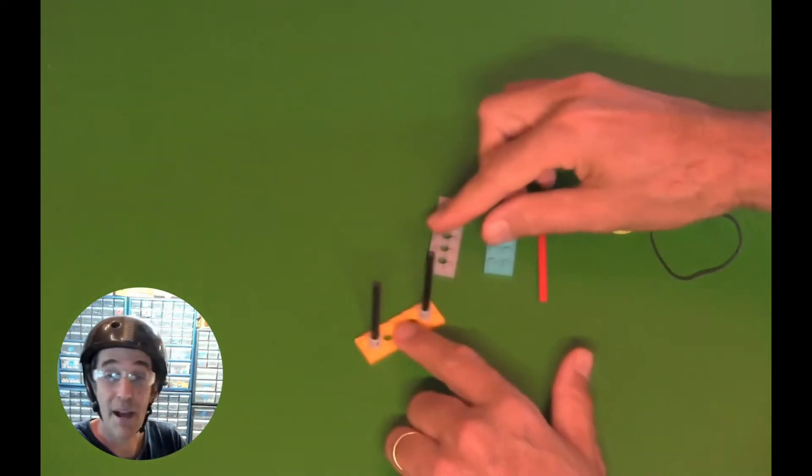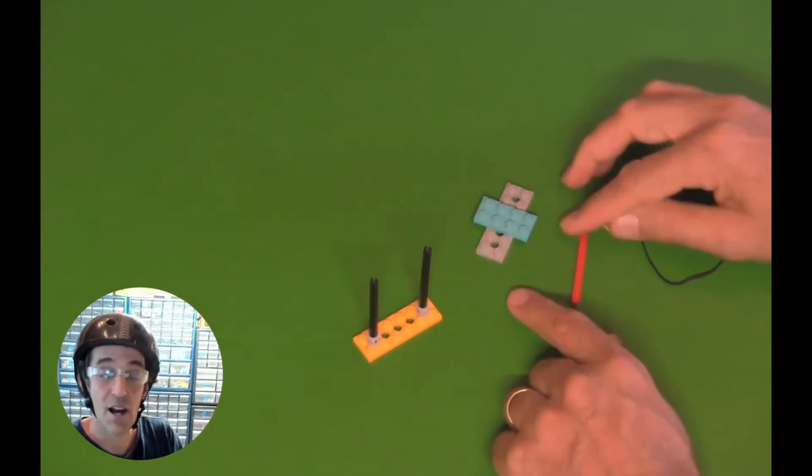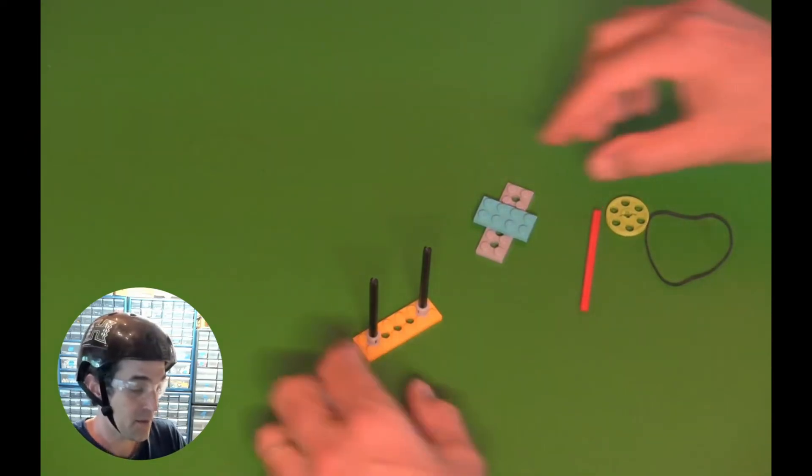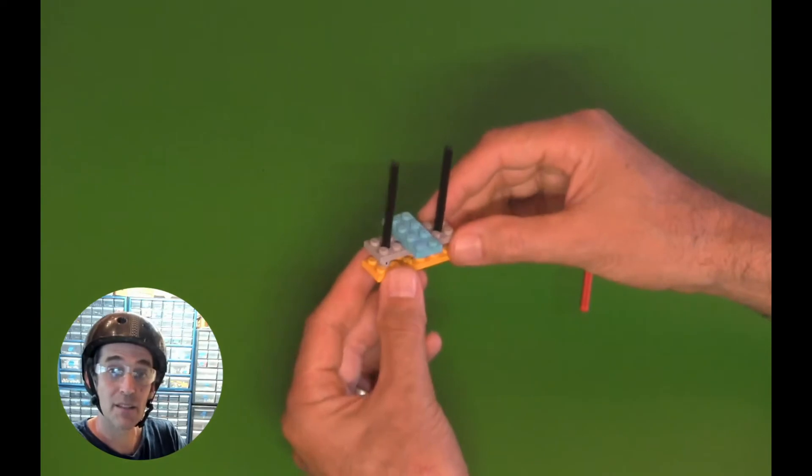Now we're going to make the back part of the bow and arrow. I'm going to take my 2x4 plate and stick it over the top, crisscross it like that, over my other 2x6 hold plate. And this is going to slide right down over the top like this.